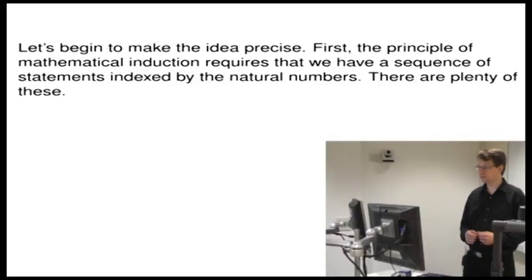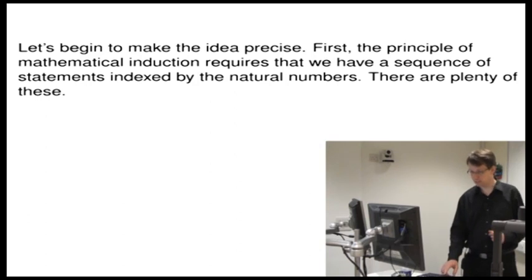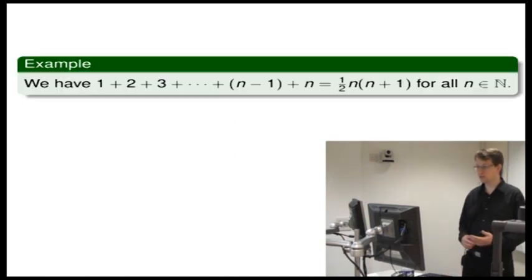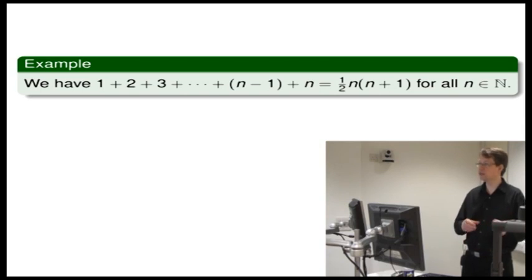Let's begin to make this idea precise. The principle of mathematical induction requires that we have a sequence of statements indexed by the natural numbers, and there are plenty of these. For example, we have 1 plus 2 plus 3 plus 4, and so on, all the way up to n minus 1 plus n, and that's equal to one half of n times n plus 1, for all natural numbers. This particular statement is indexed by n. We'll actually see that this statement is proved in a few minutes.